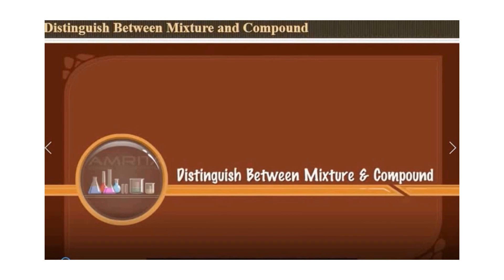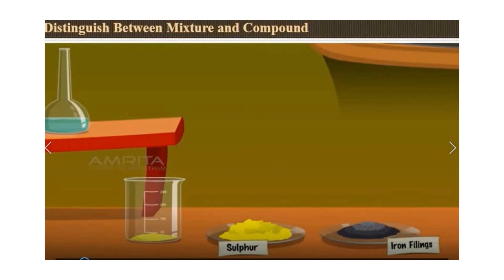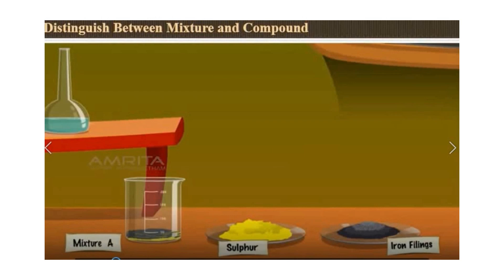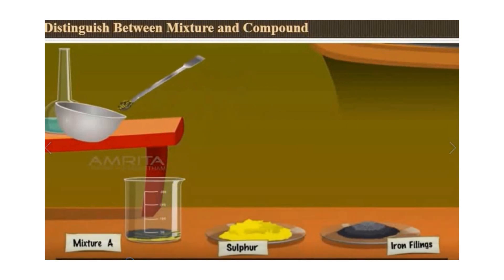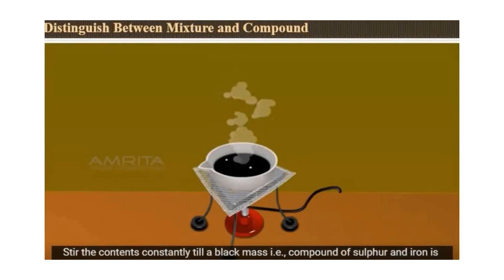How can we distinguish between mixture and compound? In this simple experiment, you will see the yellow substance — that is sulfur, with chemical symbol S — and the black substance is iron filings, which is the element iron with chemical symbol Fe. Look how the two elements are being physically combined or mixed — it is now labeled Mixture A. A few samples of the mixture are placed in a dish to be heated. After heating, a black mass which is a compound of sulfur and iron is formed.